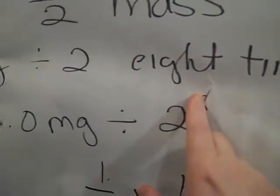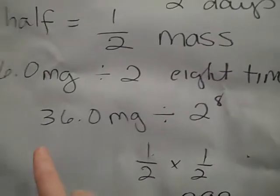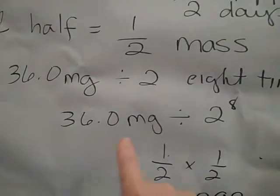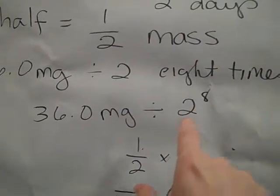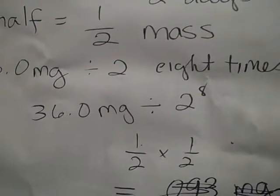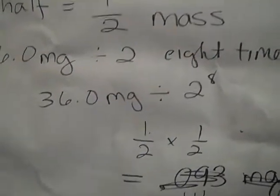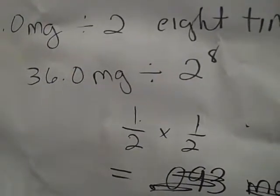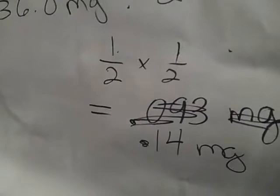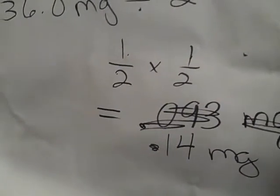So for each half-life, you could take your original amount and divide by two to whatever that half-life number was. And when we did that, there was some argument, because somebody didn't divide by two eight times, what the actual answer came out to be was 0.14 milligrams.